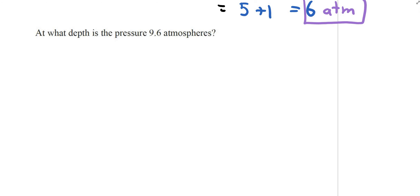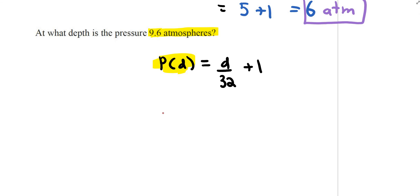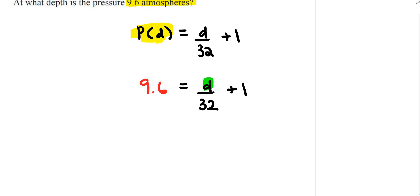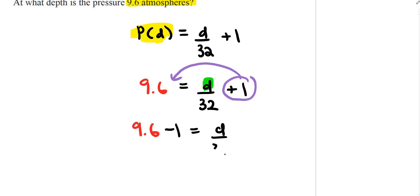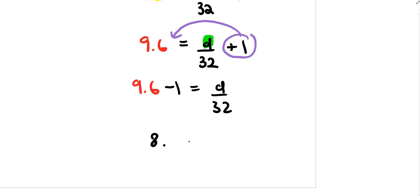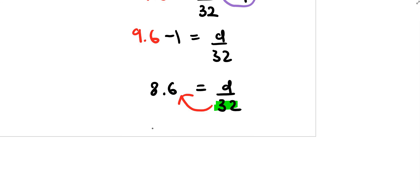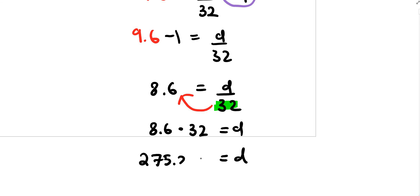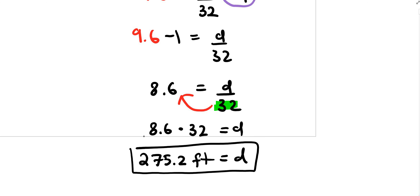For 17b, the question asks at what depth the pressure is 9.6 atmospheres. Using the same function, 9.6 replaces P(D), so 9.6 = D/32 + 1. Subtracting 1 from both sides gives 8.6 = D/32. Multiplying both sides by 32: D = 8.6 × 32. Using a calculator, that gives approximately 275.2 feet — the final answer for question 17b.